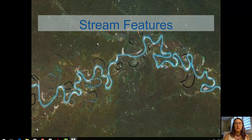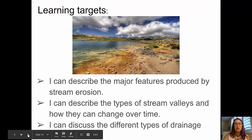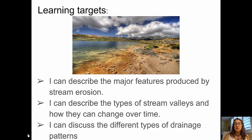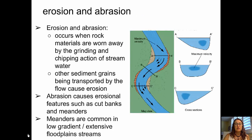Welcome to the second video in the Stream Features series. This is the second video of two. I'm Aida Awad from Broward College. The learning targets for this video include describing the major features produced by stream erosion, describing the types of stream valleys and how they change over time, and discussing the different types of drainage patterns.